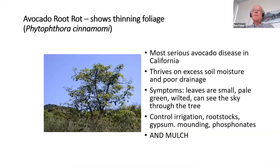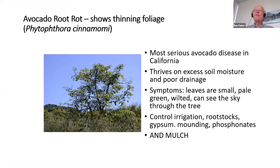In the case of avocados, we have a worldwide disease called Phytophthora cinnamomi — it's avocado root rot, probably the most serious disease of avocado. It really thrives on excess moisture and poor drainage. Water stress from lack of water can actually bring it on too. You see the thinning canopy. The problem is it looks like a water-stressed plant, so the common response is to put more water on it — which actually leads to more rapid decline of the tree.